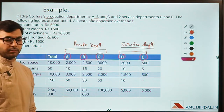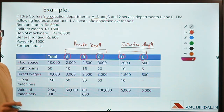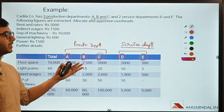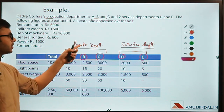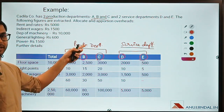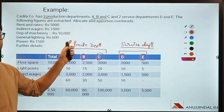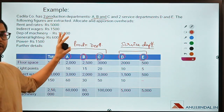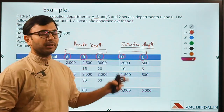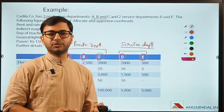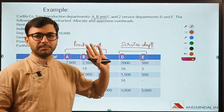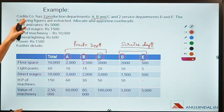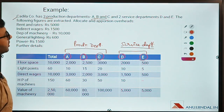For production companies it's very clear — going back to biscuits, the creation, production, and manufacturing of biscuits comes under the production department. Any supporting department such as accounting, administration, selling, and distribution — all those will be service departments. The question says Cadela Company has three production departments and two service departments, with the following figures extracted to allocate and apportion overheads.